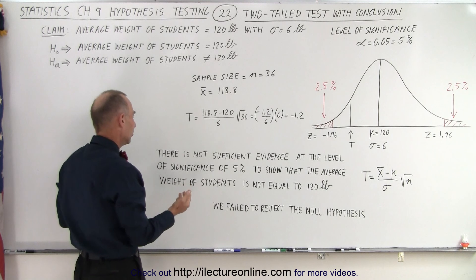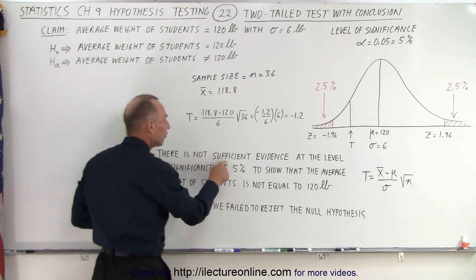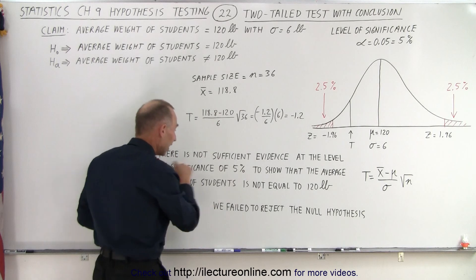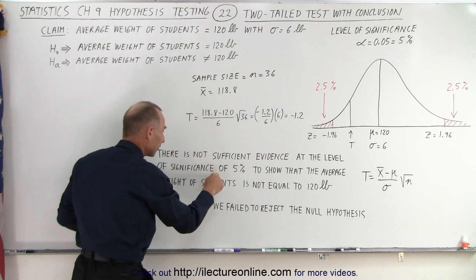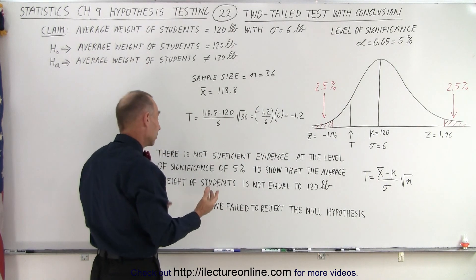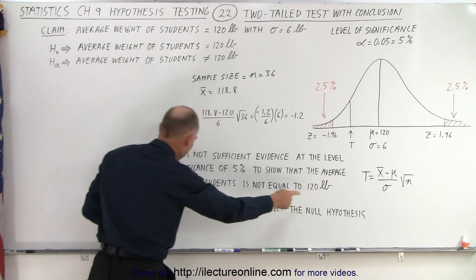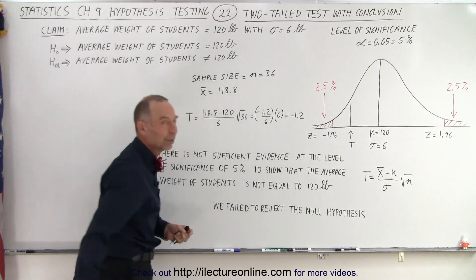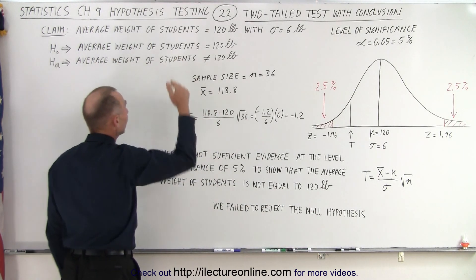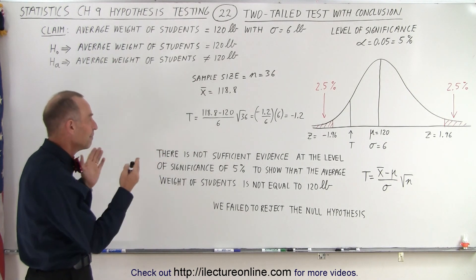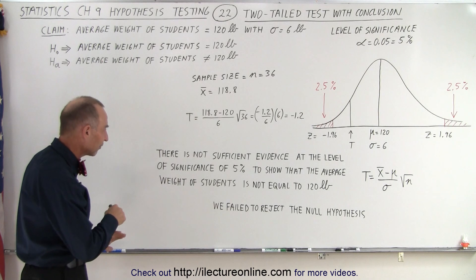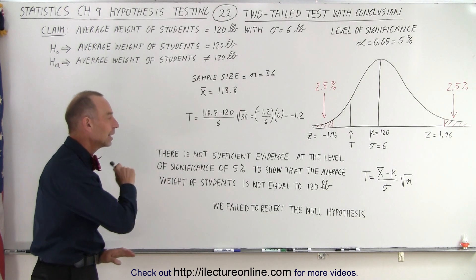Now let's read the sentence together and see what it says. There is not sufficient evidence — the reason is because the test statistic did not fall into the critical region. So we say: there is not sufficient evidence at the level of significance of five percent to show that the average weight of students is not equal to 120 pounds. We weren't able to reject the claim, and so we failed to reject the null hypothesis and must accept that the average weight of students is equal to 120 pounds based upon our hypothesis test.